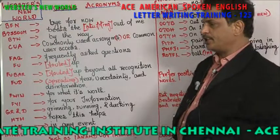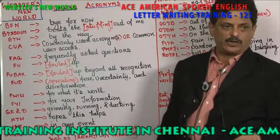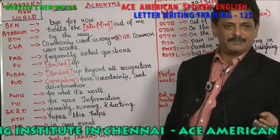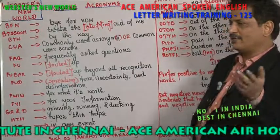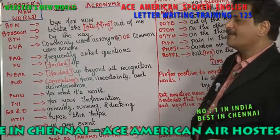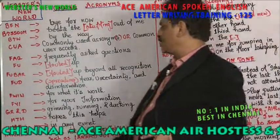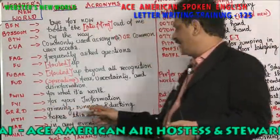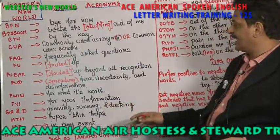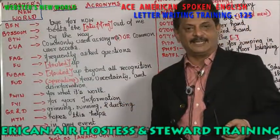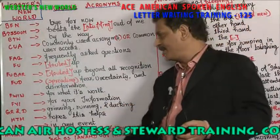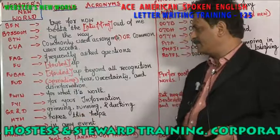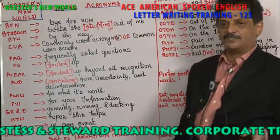FWIW also means 'for your information' — for example, 'for your information, tomorrow will be a holiday.' In cell phones, you send a message FYI — for your information. GR&D means grinning, running, and ducking. HTH means 'hope this helps.'